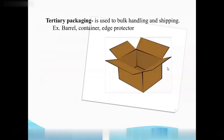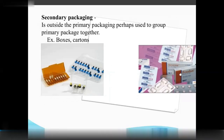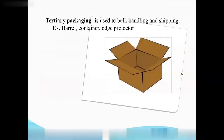Tertiary packing is for bulk handling and shipping. We have a lot of products — the strip is primary packing, the strip in a box is secondary packing, and all these small boxes are placed in cardboard — that is tertiary packing. This is for bulk handling, transport and shipping. Examples include barrels, containers, and edge protectors.